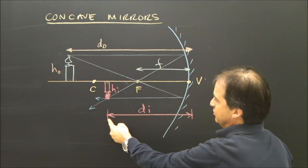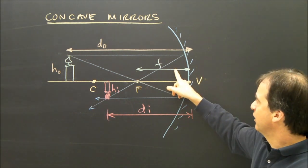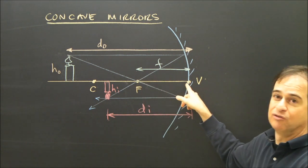And distance to image, from where the mirror is to where the image is located. And the focal length, that's this distance here, from the focus to the vertex.